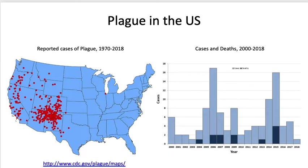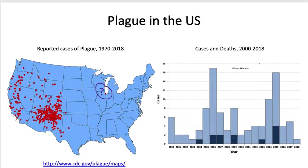Plague still occurs and has not disappeared. A graph of reported U.S. cases from 1970 to 2018 shows sporadic outbreaks, likely associated with rodent and flea populations in certain areas. There have been anywhere from 0 to 20 cases per year in the U.S., so it's still slightly prevalent but definitely not a leading cause of bacterial infections.